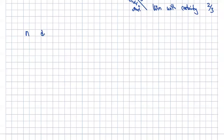To really understand this, let's generalize. Say we have N doors, where N is greater than or equal to three — the original problem is the special case of N equals three. Monty, who was the host of this famous show, opens M goat doors. We retain the idea that there's only one car.